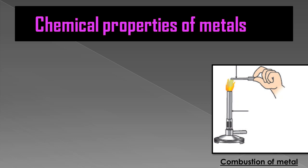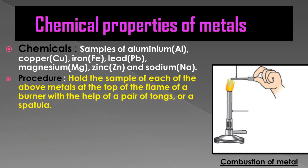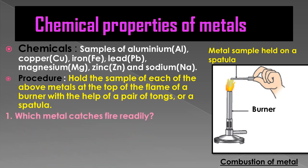This experiment is the combustion or burning of a metal. The chemicals needed are samples of aluminium, copper, iron, lead, magnesium, zinc, and sodium metals. The procedure is to hold a sample of each metal at the top of the flame of a burner, as shown in the alongside diagram, with the help of a pair of tongs or a spatula. You have to observe which metal catches fire readily.